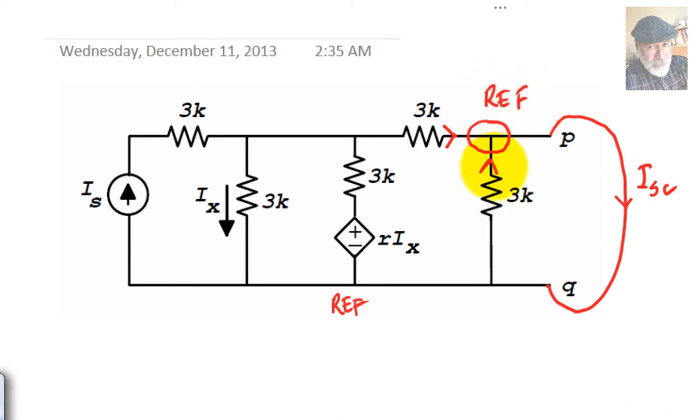And this current will be the current in an R branch. Voltage of the origin, Vref, 0 volts. Minus voltage of the destination, Vref, also 0 volts, 0 minus 0, divided by 3000 ohms. That is 0 amps. This current is 0 amps. That is a short-circuited resistor.